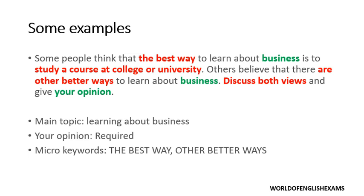If you just highlight the keyword as 'business,' you're going to write about ways to learn about business. But what is being said here is that it is the best way — you need to focus on this throughout the essay, or at least in the first body paragraph, because there is another point of view as well. Others believe that there are other better ways. You should not focus on going to a college in the second body paragraph — you have to talk about alternative ways.